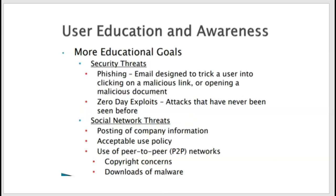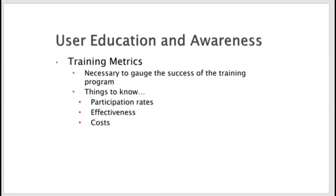You would also have policy to address phishing threats, zero-day exploits, and social networking threats. Finally, keep metrics — training metrics. If people are repeat clickers on a phishing training link you send out, and three people keep clicking on it, keep those metrics. Those are people you want to focus on for additional training. That was a whirlwind view of policy at a high level and a lot of the things we're going to talk about. I hope you enjoyed it — I look forward to spending the next 10 weeks with you discussing it.